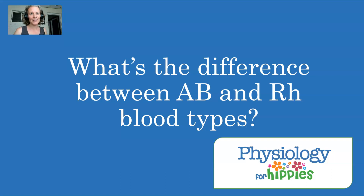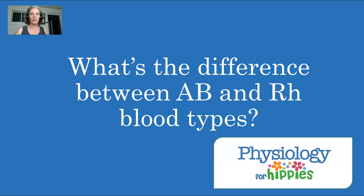Hey everybody, it's Camille Friedman with Physiology for Hippies. I got a question from one of my students the other day asking about ABO and RH blood types. She was saying she basically understands ABO blood typing and how it might relate to blood transfusions, but what is the deal with the RH? How does that fit in?